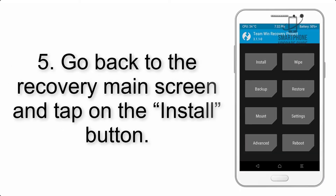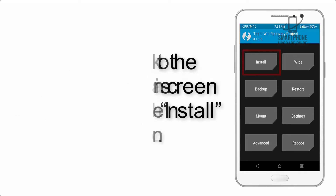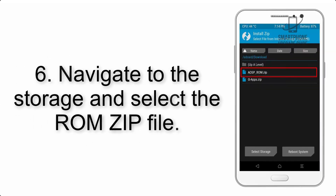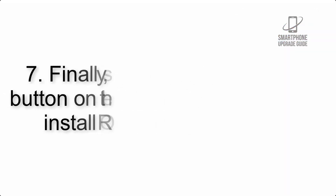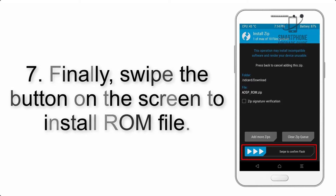Step 4: Swipe the button to wipe the device. Step 5: Go back to the recovery main screen and tap on the Install button. Step 6: Navigate to the storage and select the ROM zip file.